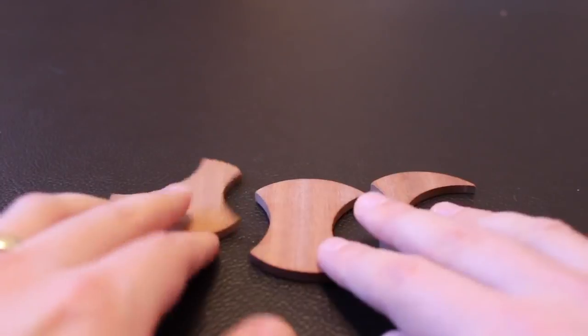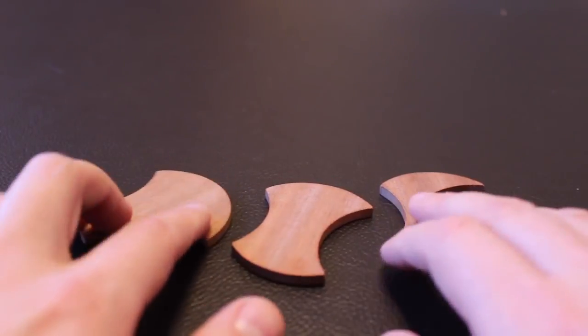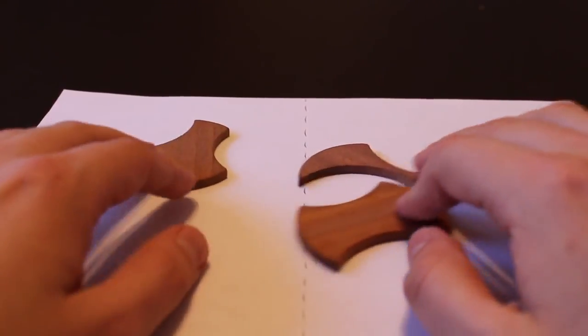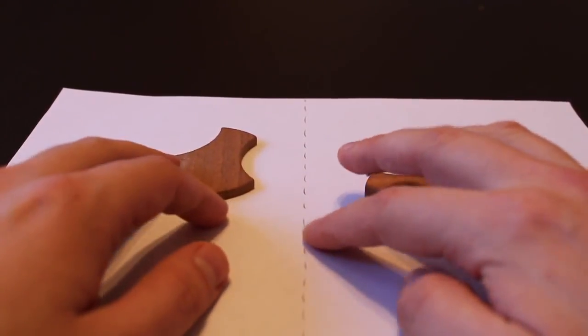The entire puzzle is these three pieces on the table, and the object is to make a symmetrical shape. A symmetric shape is one that would look the same on both sides of this dotted line.